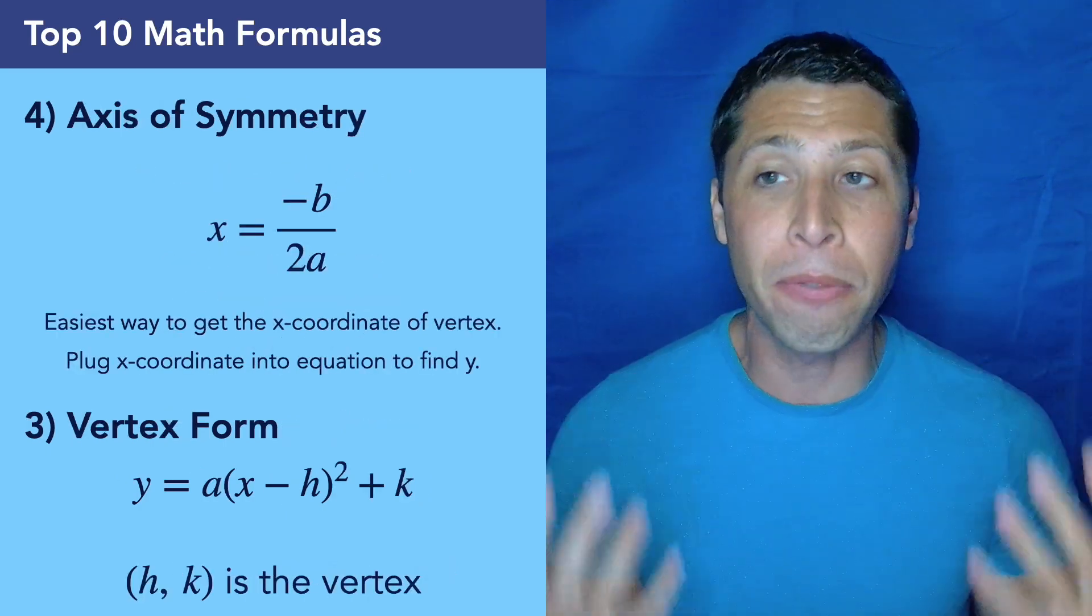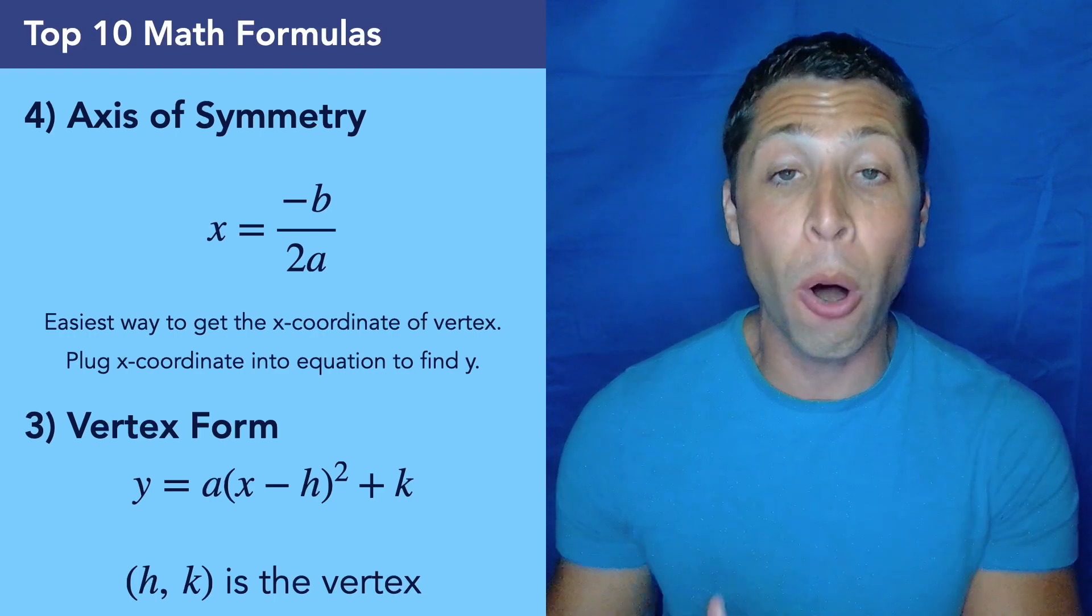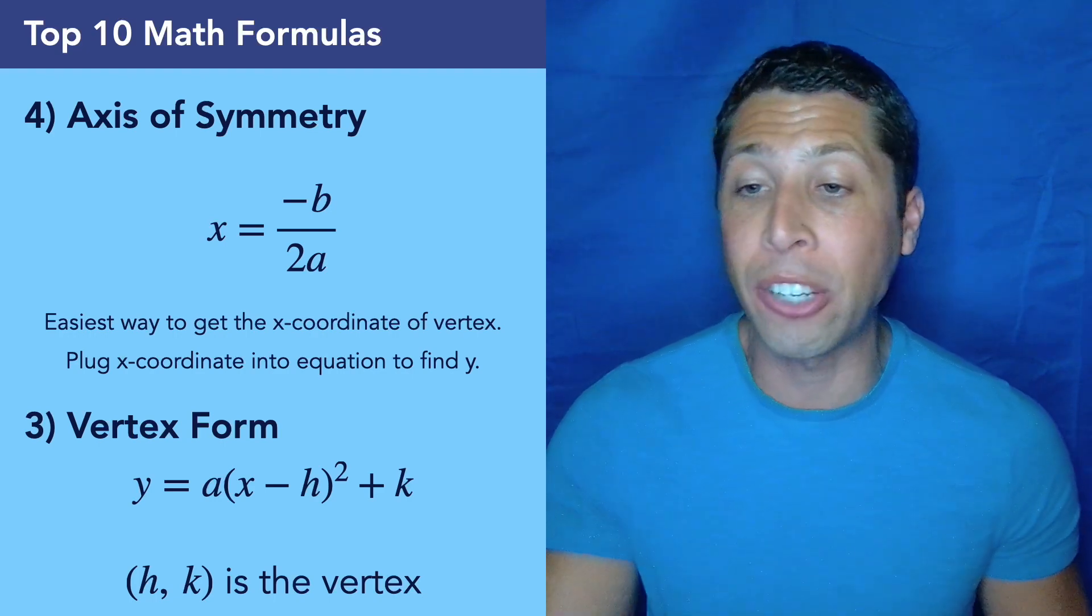Numbers 4 and 3 are also related, they're about the vertex. The axis of symmetry is my favorite way of getting the vertex, but we also need to be able to read the vertex form of the equation, which is at number 3.